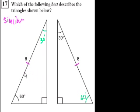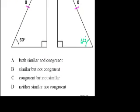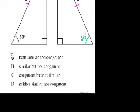But in geometry class, you learn that if something is similar and at least one of the corresponding sides is congruent, then the whole thing is going to be congruent. So these are both similar and congruent triangles. That's A.